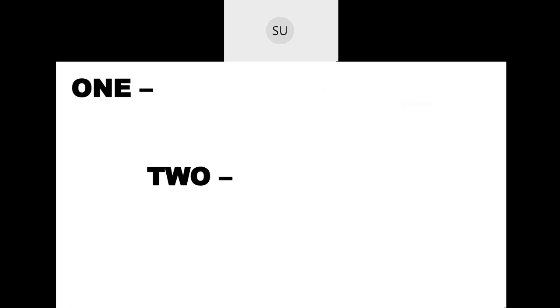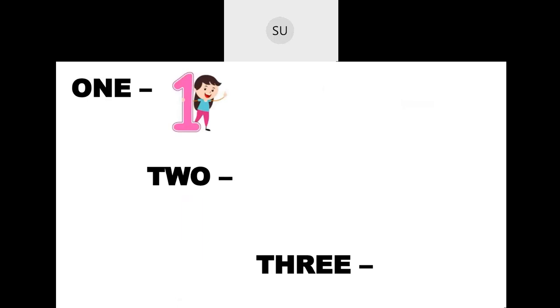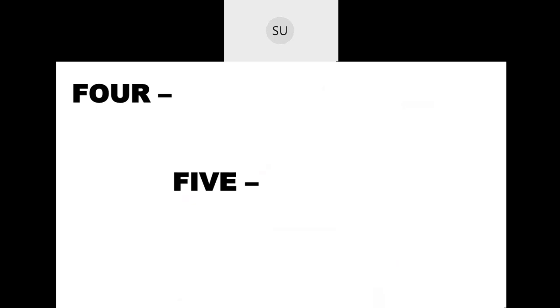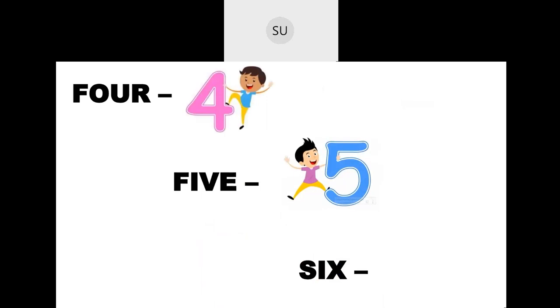Now let's see how to write the numbers. 1 is written as O-N-E. 2 is written as T-W-O. 3 is T-H-R-E-E. 4 is F-O-U-R. 5 is F-I-V-E. 6 is S-I-X.